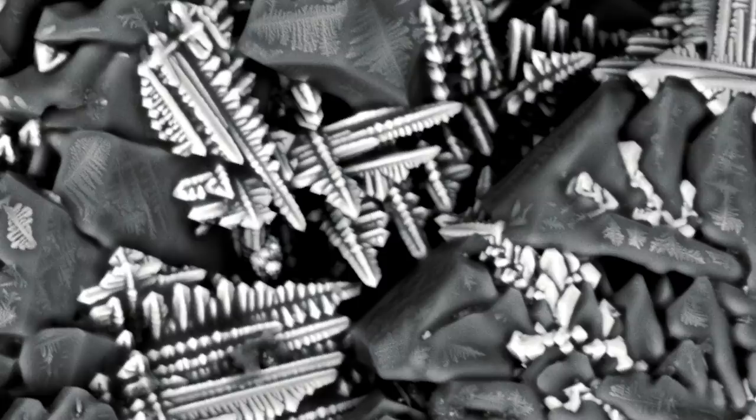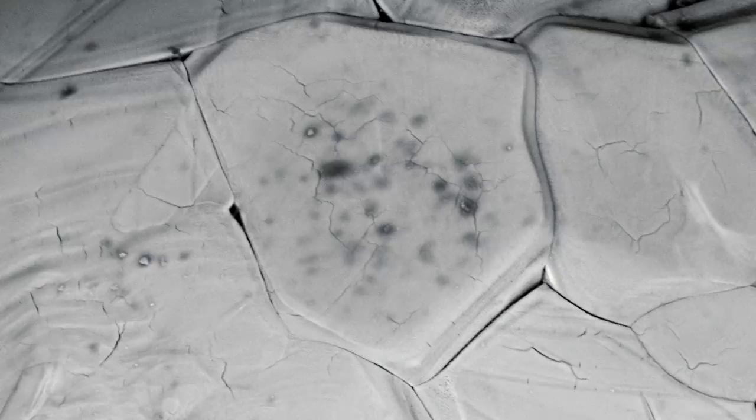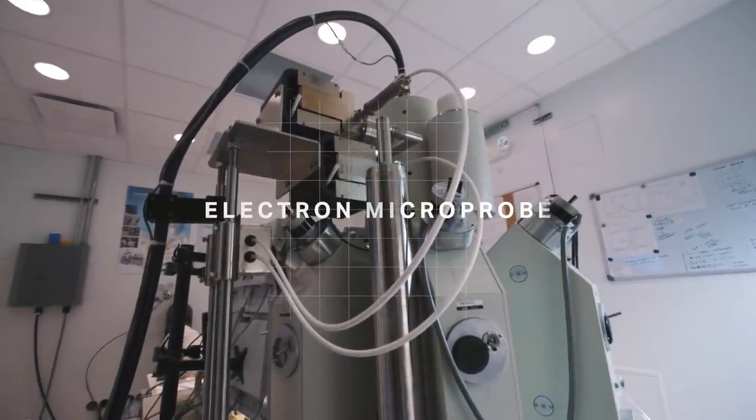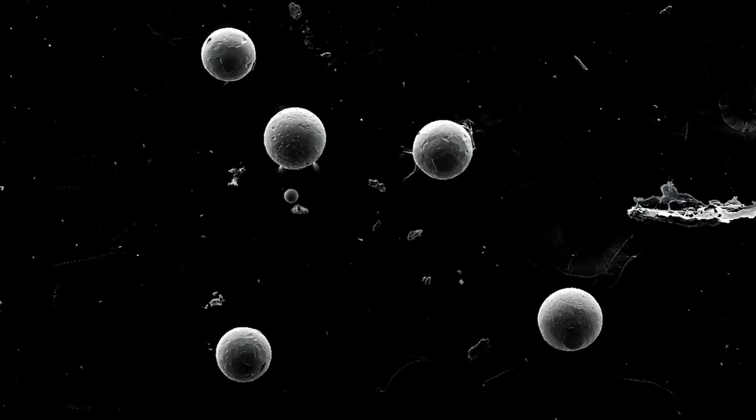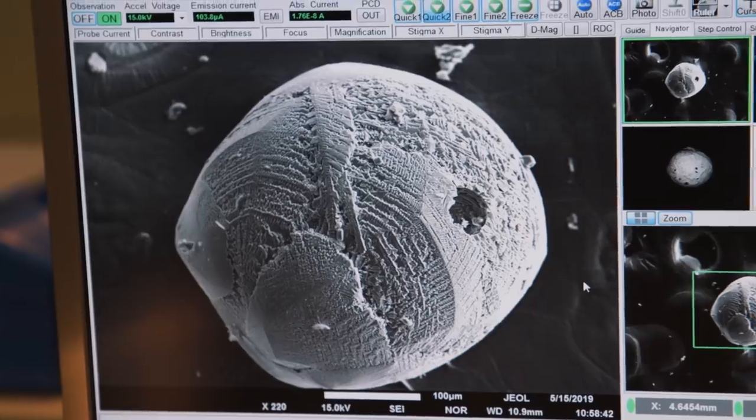What you're looking at are tiny bits of rock and metal under a device called an electron microprobe. The samples came from a rooftop in Brooklyn, but they might have traveled quite a ways to get there, possibly from outer space.